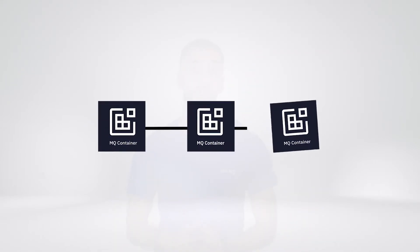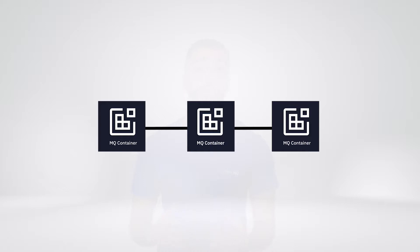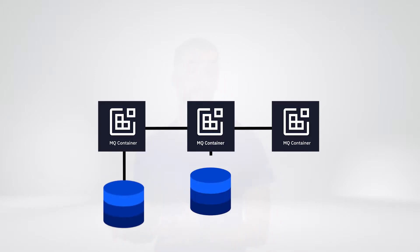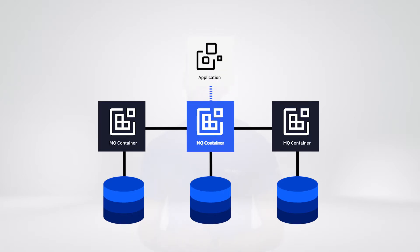A Native HA queue manager consists of three instances, each with their own persistent storage that MQ will keep in sync. The queue manager automatically elects one of those instances as the active instance that applications connect to, to send and receive messages.